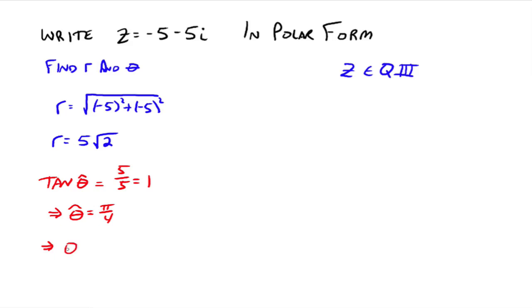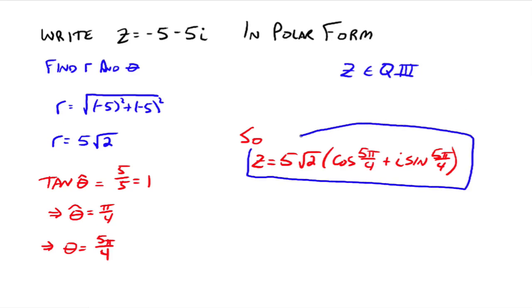So z is equal to 5 square root of 2 r times the cosine of 5 pi over 4 plus i sine 5 pi over 4. And that is the trigonometric form or the polar form of the complex number. Now, you might be thinking that big deal that looks worse than the negative 5 minus 5i. And while I agree it looks worse, it can be easier to play with. We'll get to that a little bit later.